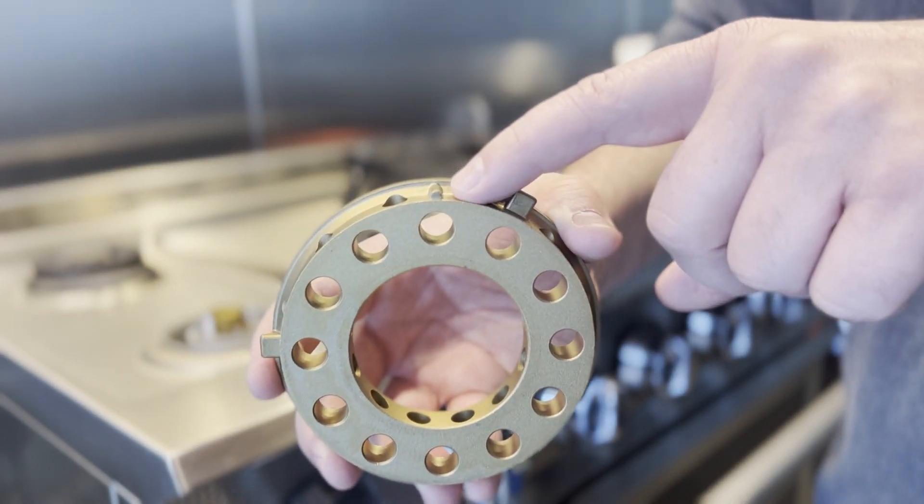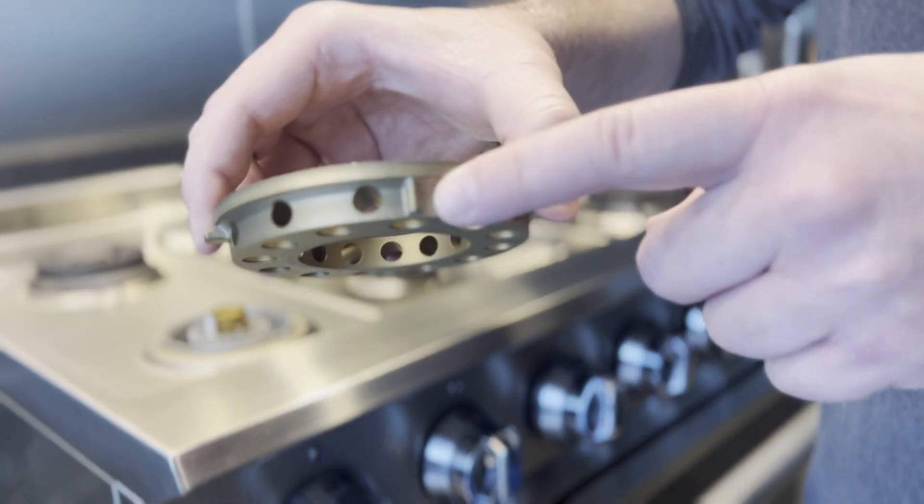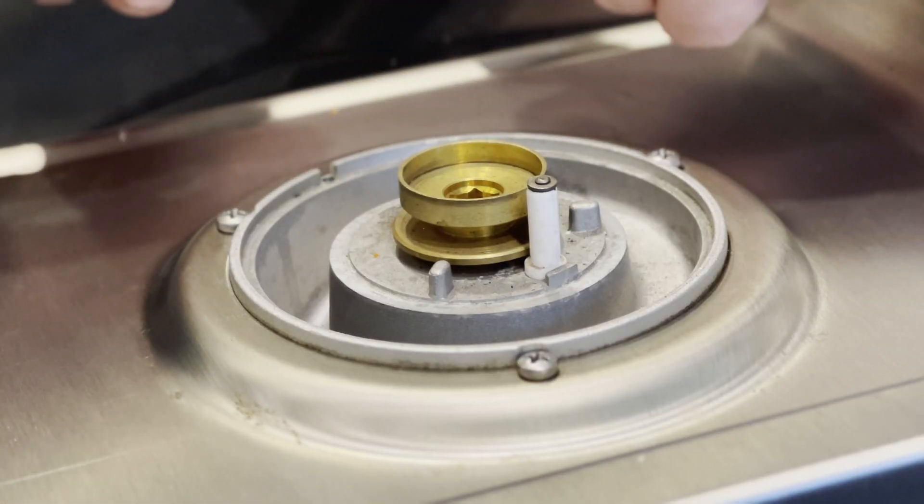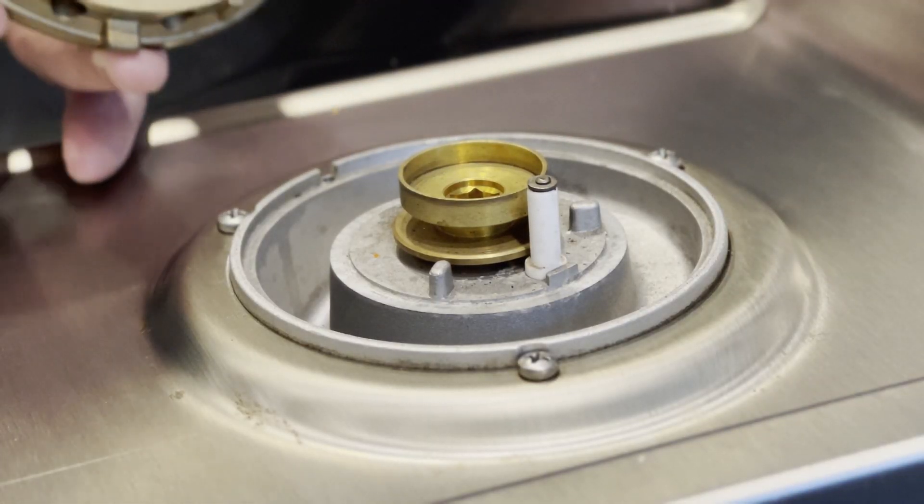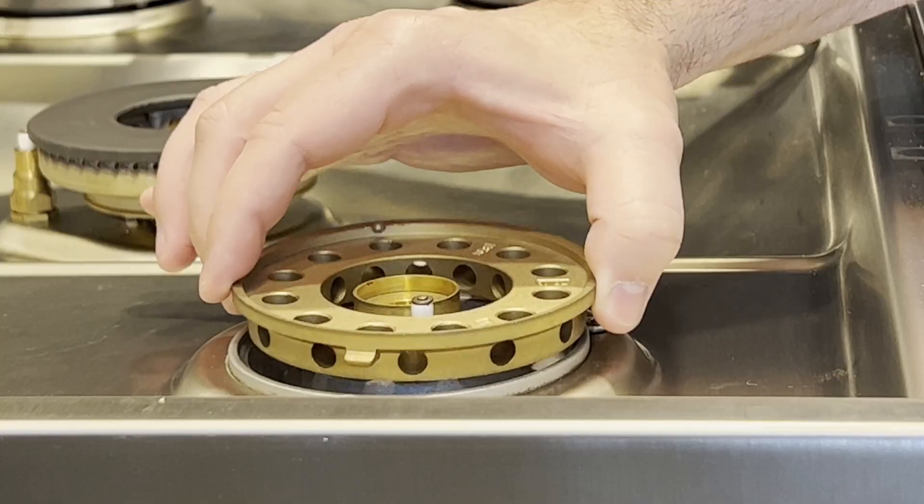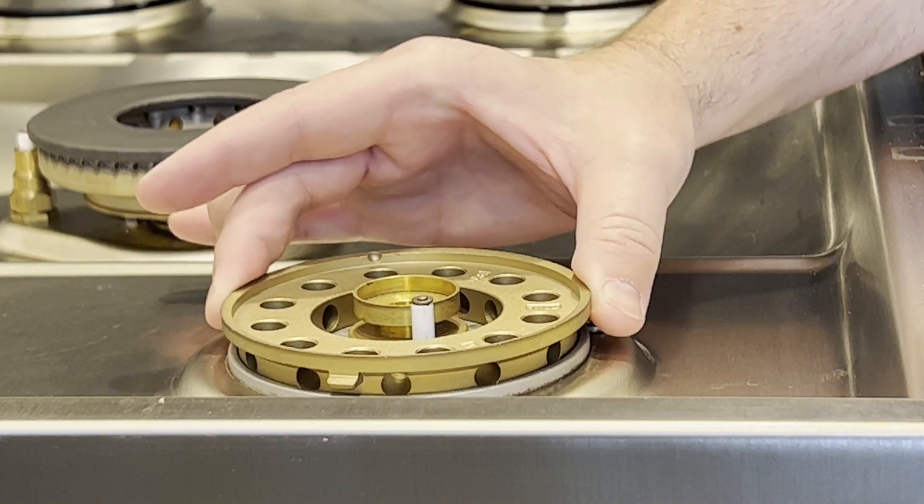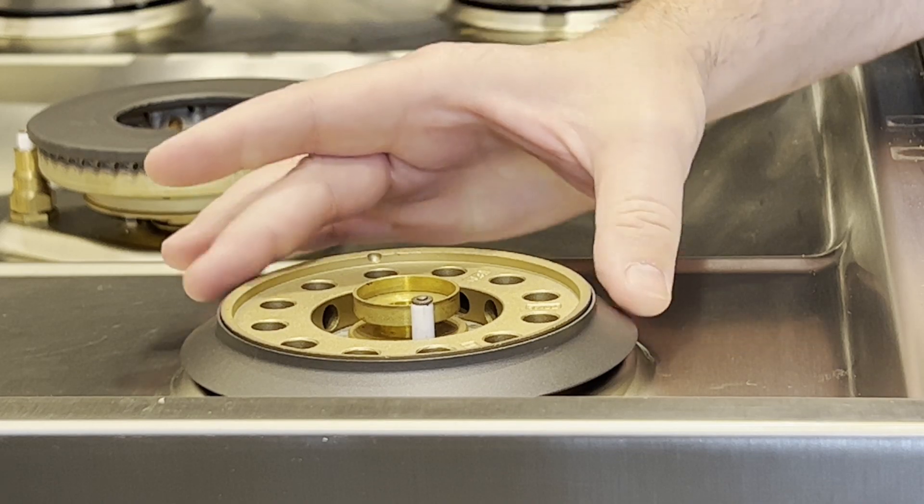Begin by placing the burner base on the burner, making sure that the notches on both are lined up to prevent it from moving and locking into place. Next, add the beauty ring onto the burner base.